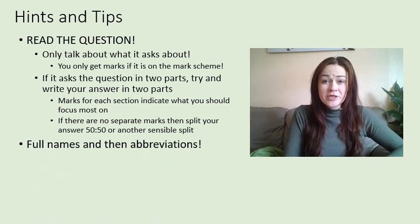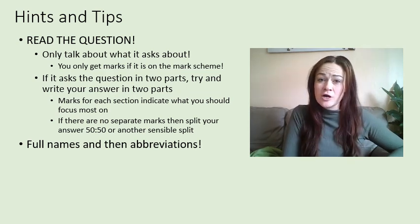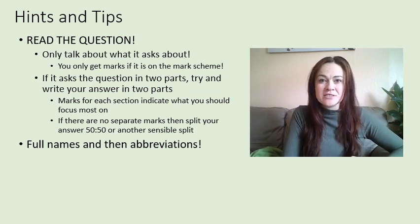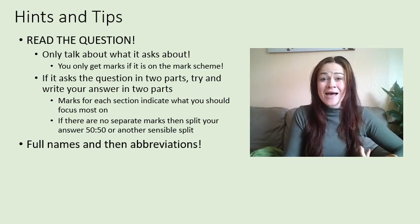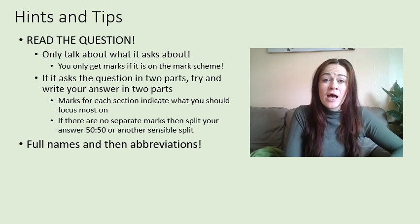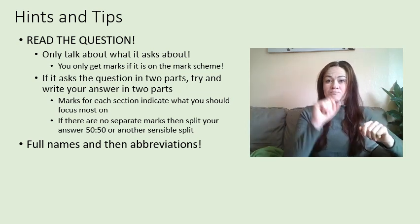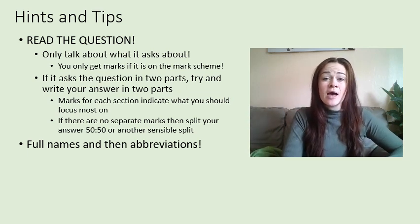Use full names at least once and then use abbreviations — don't just start with abbreviations or you might not get the mark. For example, if you're talking about base pairs in DNA, don't write 'A pairs with T.' You must say 'Adenine pairs with Thymine.' You can write Adenine and then put (A) in brackets, and then use just A throughout the rest of your essay — that's fine, but you must use the full name first.